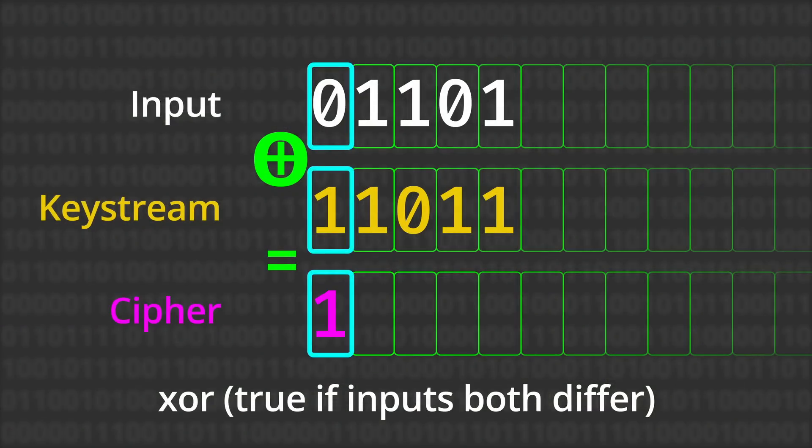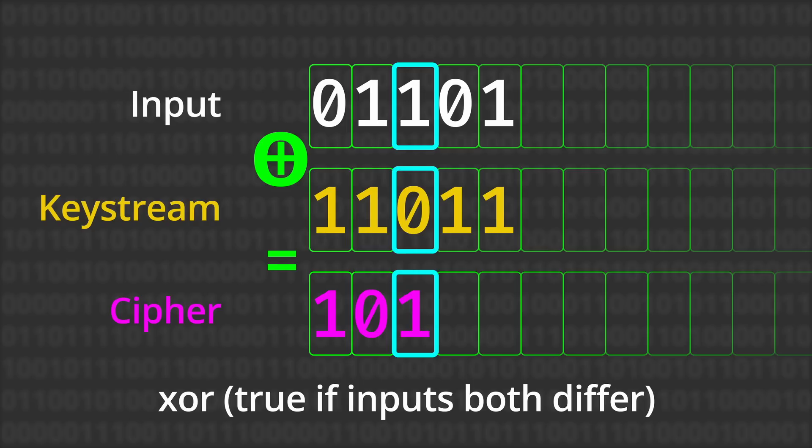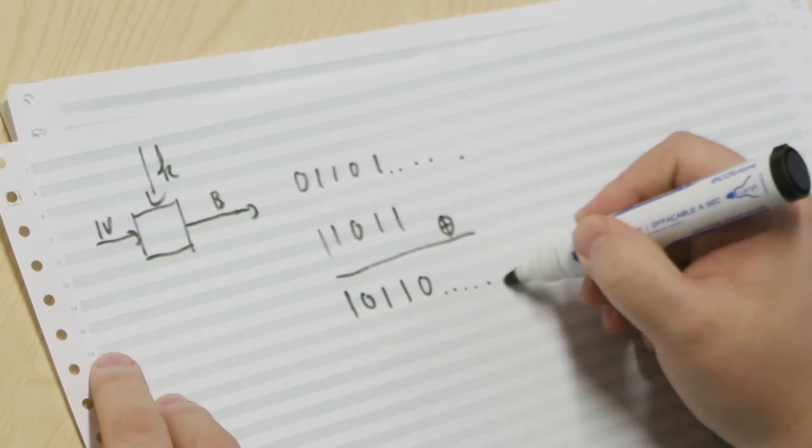And what we do is we XOR all the bits one by one. 0 and 1 is 1, 1 and 1 is 0, 1 and 0 is 1, 0 and 1 is 1, 1 and 1 again is 0. And we keep doing that for the entire string.